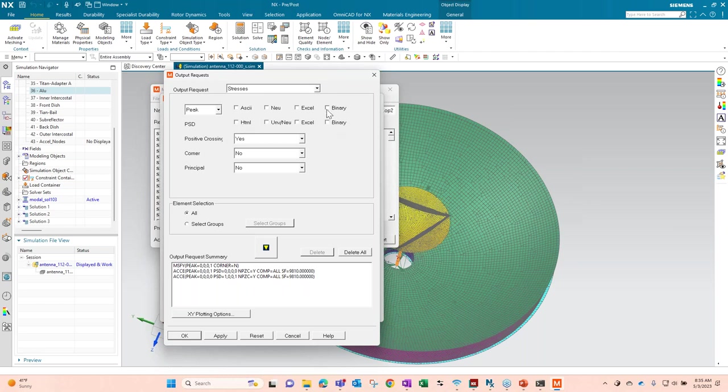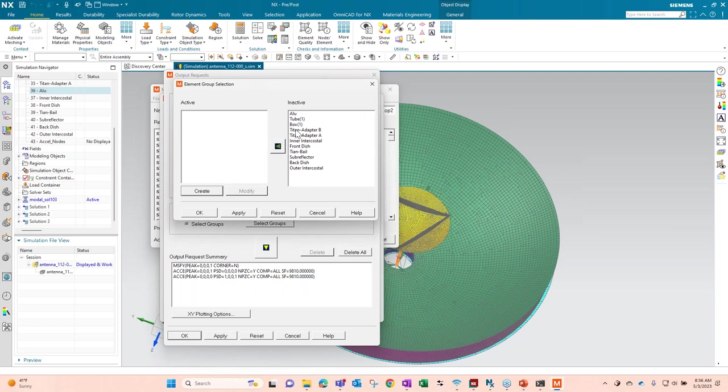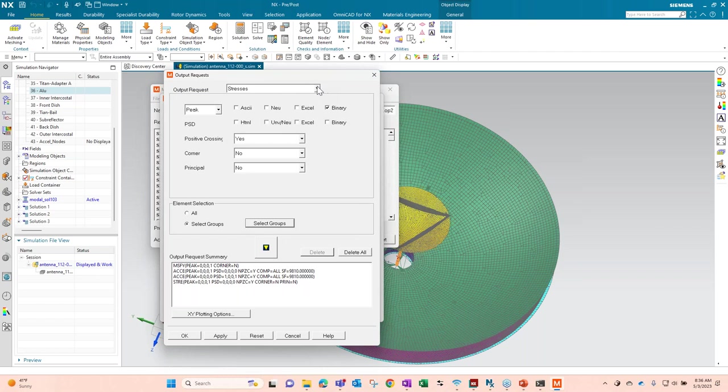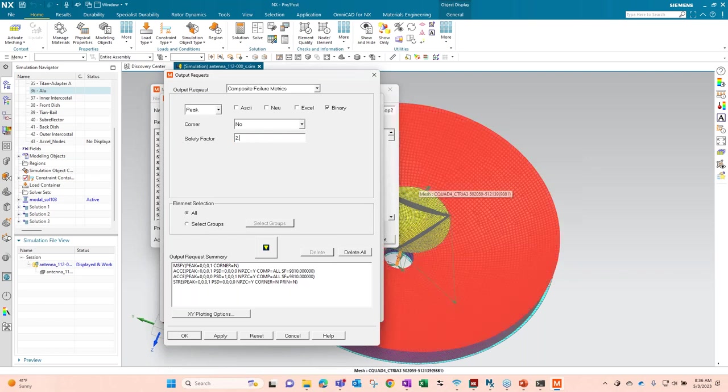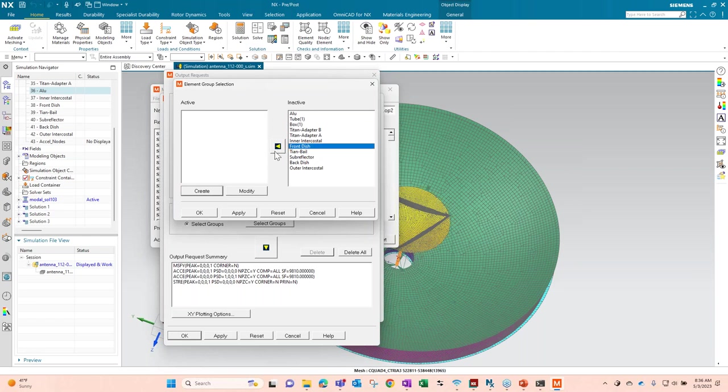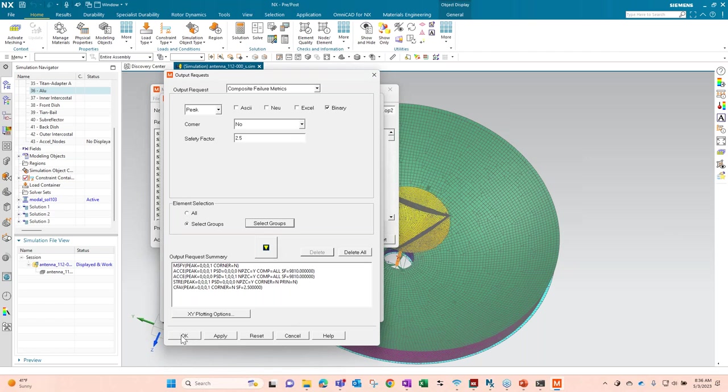So I'll add that. I'm doing HTML here and the binary. So I can look at them in Simcenter or an HTML file afterwards. Let's look at some stresses. We'll go back to just the peak. Again, peak. That's the three sigma, the binary there. And let's limit this to, let's just do that aluminum horn again. And the composite failure metrics. I said there's a lot of composites in this. Let's give that a good safety factor. And we'll pick some of our composite groups here that we're using. Front dish, back dish. And show those.